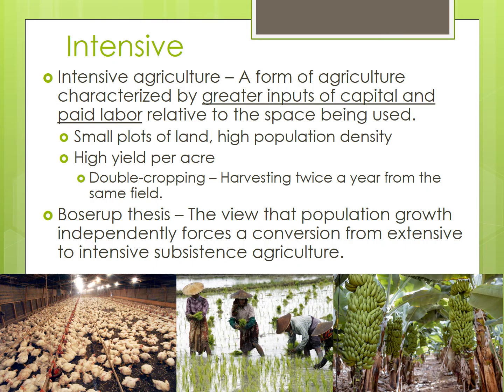Rice farming provides a staple for many people but is very labor intensive, requiring a lot of people, often harvesting by hand. Market gardening, on the other hand, is more capital intensive, needing lots of machinery and vehicles to get fruits and vegetables to market before they go bad. Plantations often harvest cash crops like sugar, coffee, tea, and cacao.